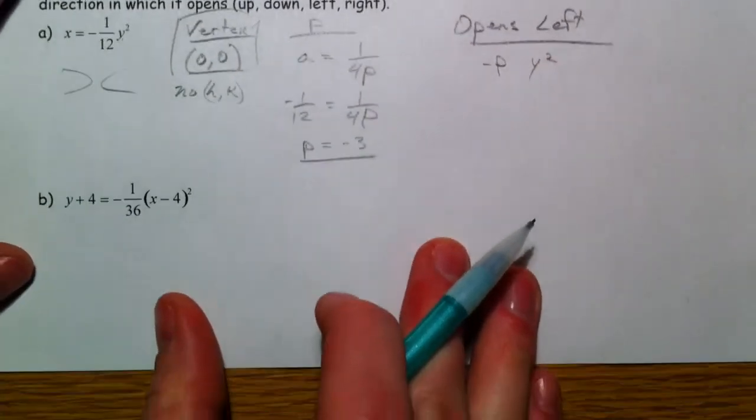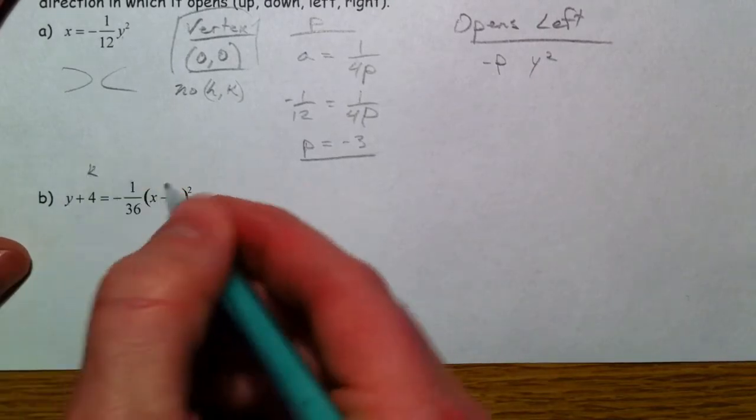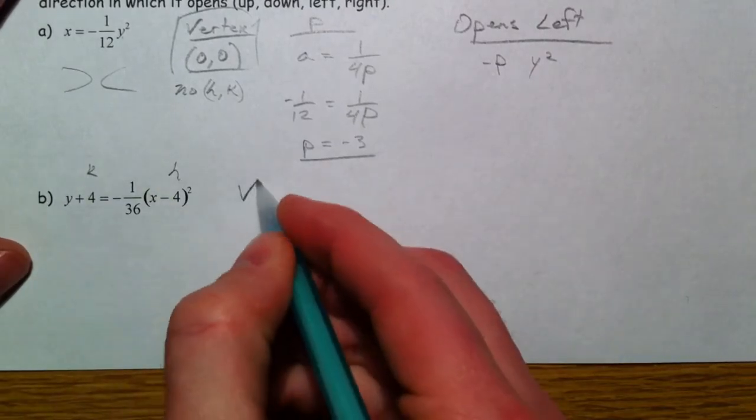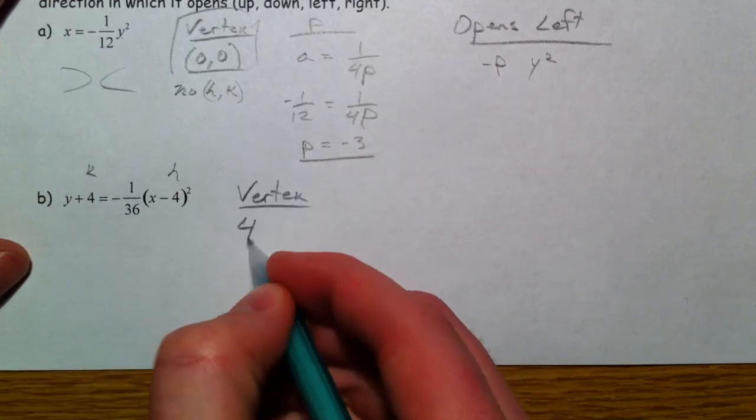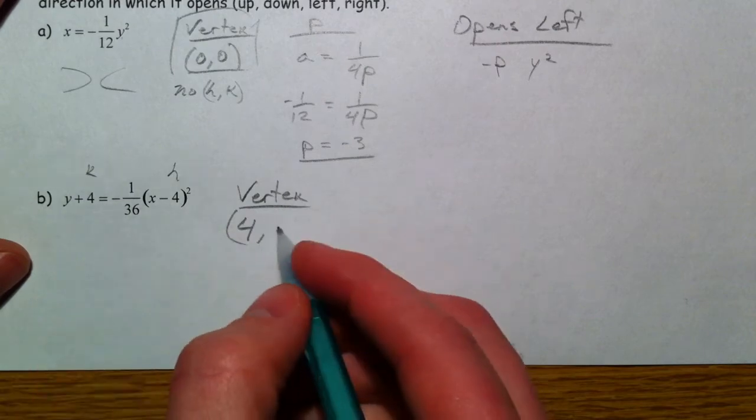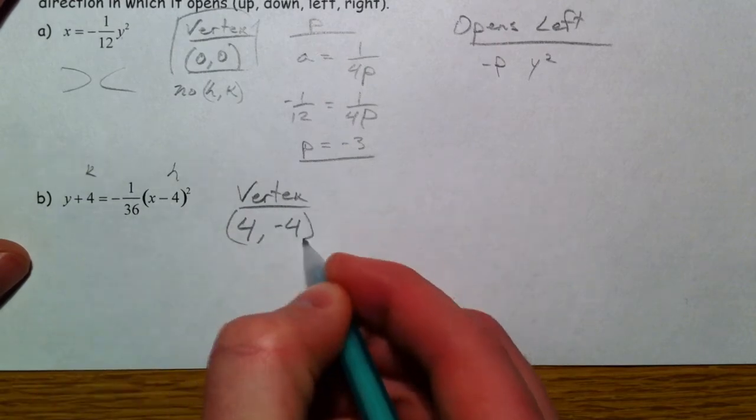Alright. For the next one. We've got our k and our h. And so our vertex. Remember, on this one, it's opposite for the x and opposite for the y. Because they're both with the right variables. So this is (4, negative 4).